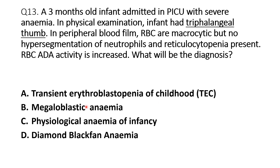Option B is megaloblastic anemia. It is very rare in a 3-month-old baby. The congenital malformation is not supporting megaloblastic anemia. RBCs are macrocytic in megaloblastic anemia, but hypersegmentation of neutrophils is generally present — and here there is no hypersegmentation. RBC-ADA activity is also normal in megaloblastic anemia. So this option is ruled out.